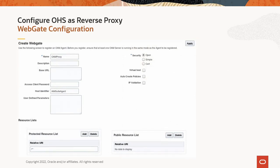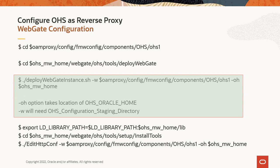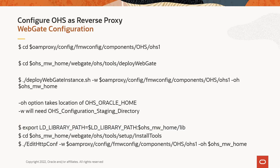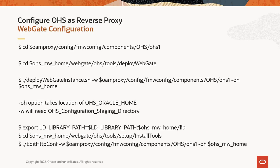This slide shows more steps for webgate configuration. On the web server, change directory to the location shown on the slide. Run the deploy webgate instance.sh command with the given arguments and corresponding folder locations. Export the library path — it is required for edithttpconf to run correctly. Change directory to the folder where the edithttpconf utility is and run the command with the given arguments. It will take a backup of httpd.conf and include the webgate.conf line.